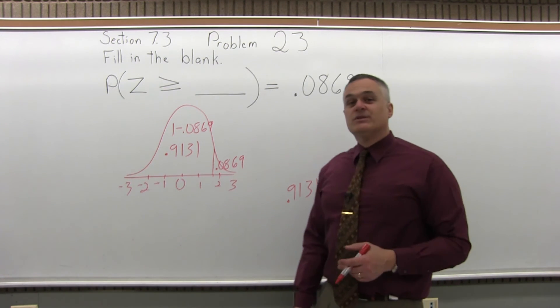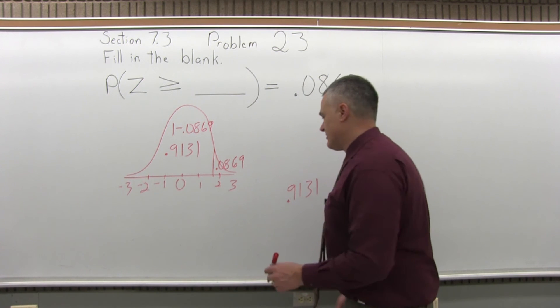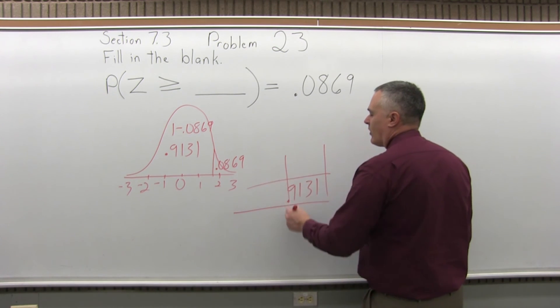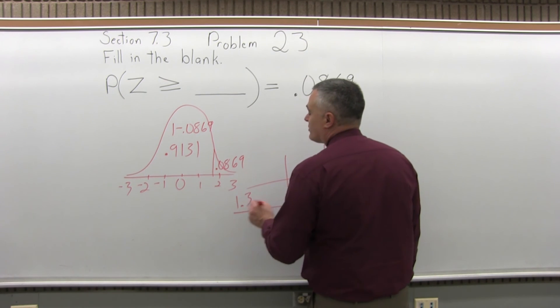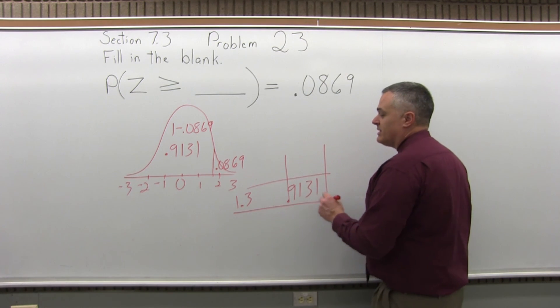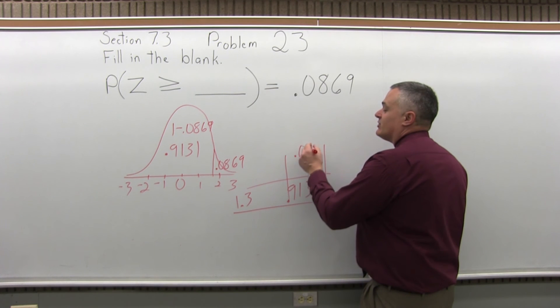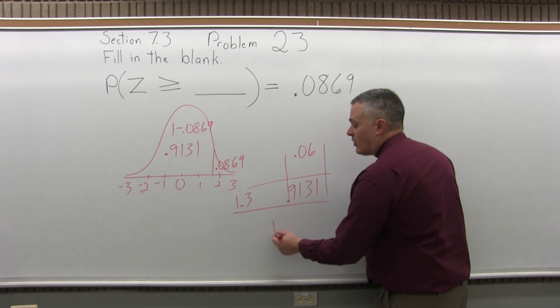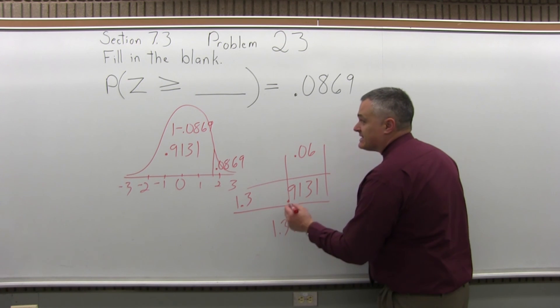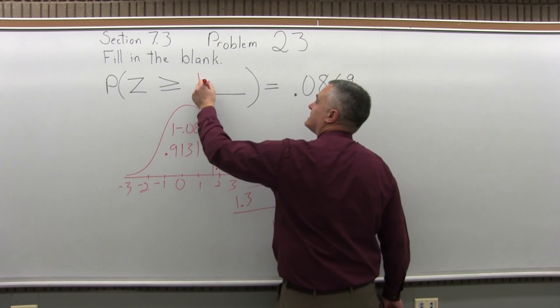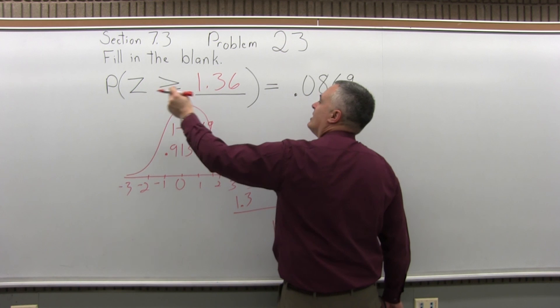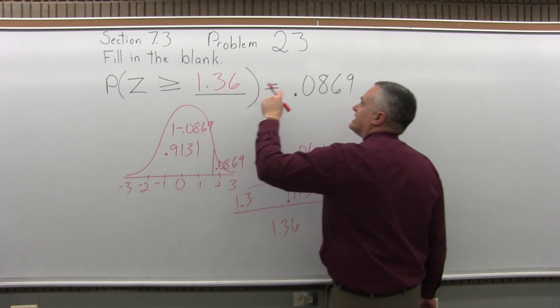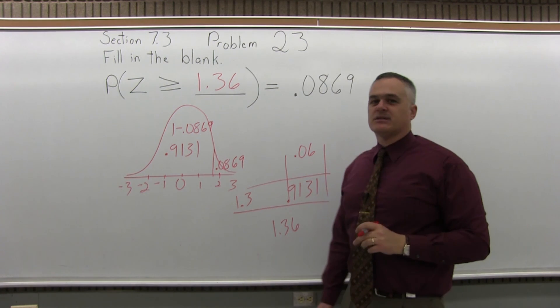Now what you have to do is see what row and what column it's in. So if you have found the .9131, you'll see that it's in the 1.3 row and the column that it's under is .06. So the number that you originally looked up was 1.36 and it's a positive 1.36. That's what fills in the blank. The probability that Z is greater than or equal to 1.36 is .0869.